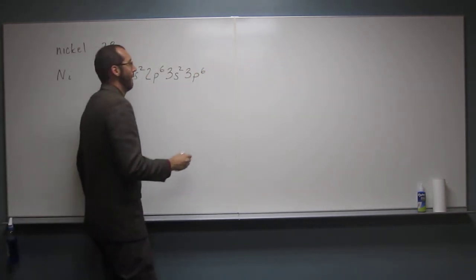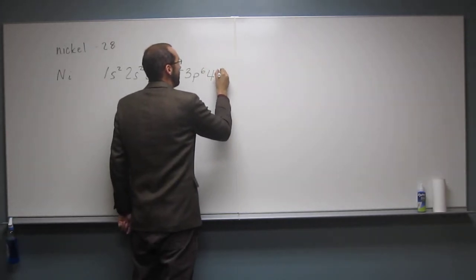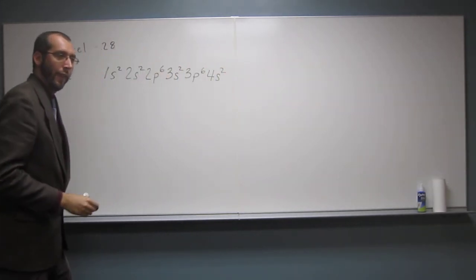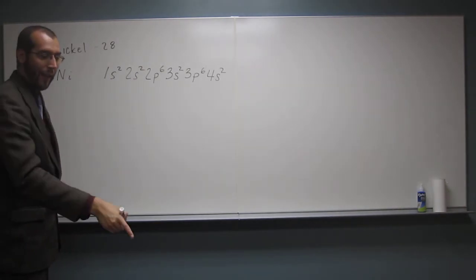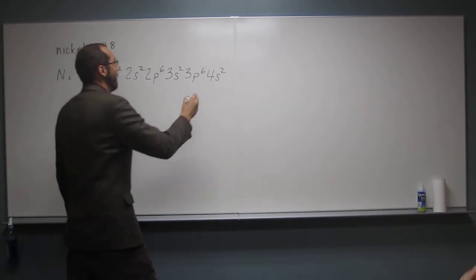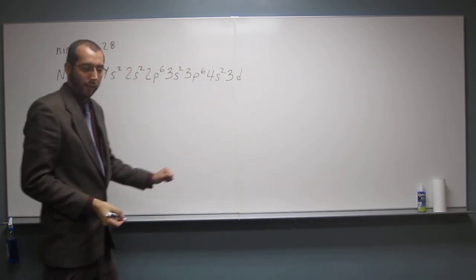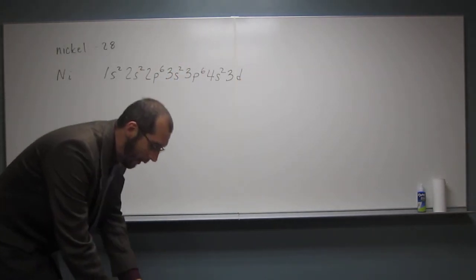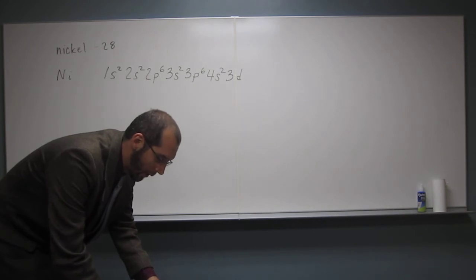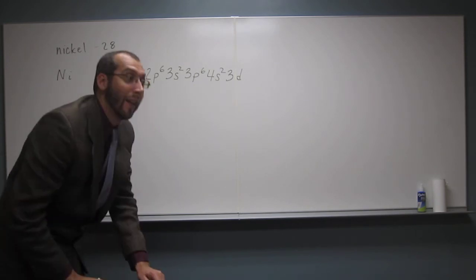So, what's next? 4s2. Right? And then what? 3d. But not 10, right? Because nickel's in that period, right? In that set of orbitals. So, it's going to be 3d, 2, 4, 6, 8. Like that. Okay?